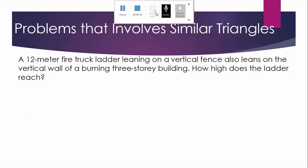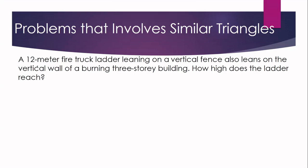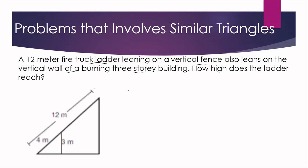Let us proceed with the third and last problem. A 12-meter firetruck ladder leaning on a vertical fence also leans on a vertical wall of a burning three-story building. How high does the ladder reach? The 12-meter ladder leans on the fence and also leans on the wall of the building. In the illustration, the ladder is 12 meters, this is the fence, and the ladder also leans on the wall. What is being asked — how high does the ladder reach — refers to this height, which we call X. We will create an equation using corresponding sides.